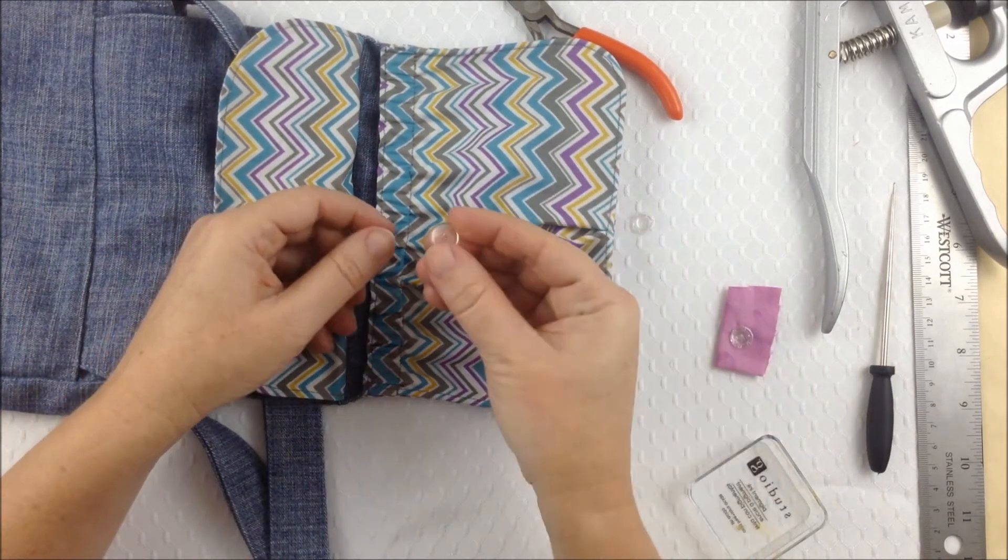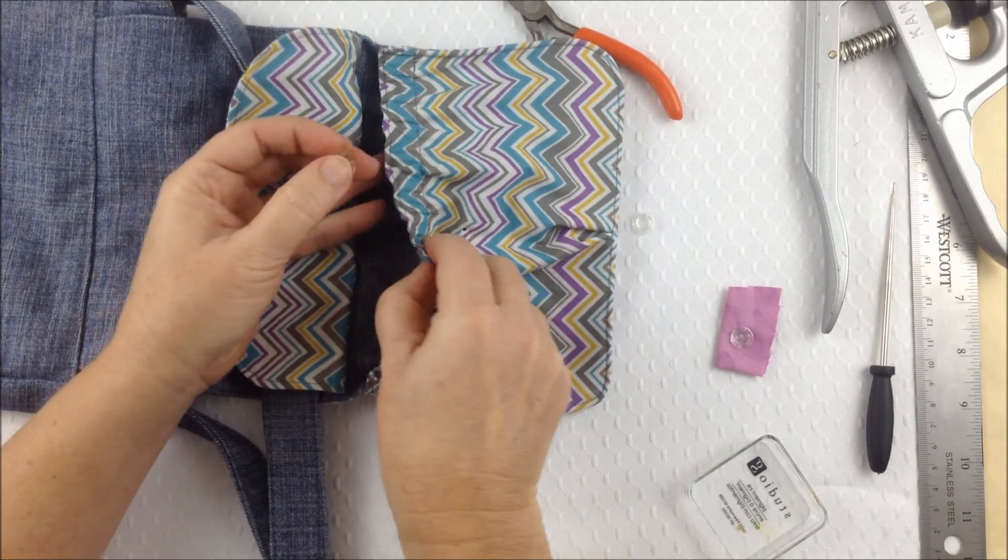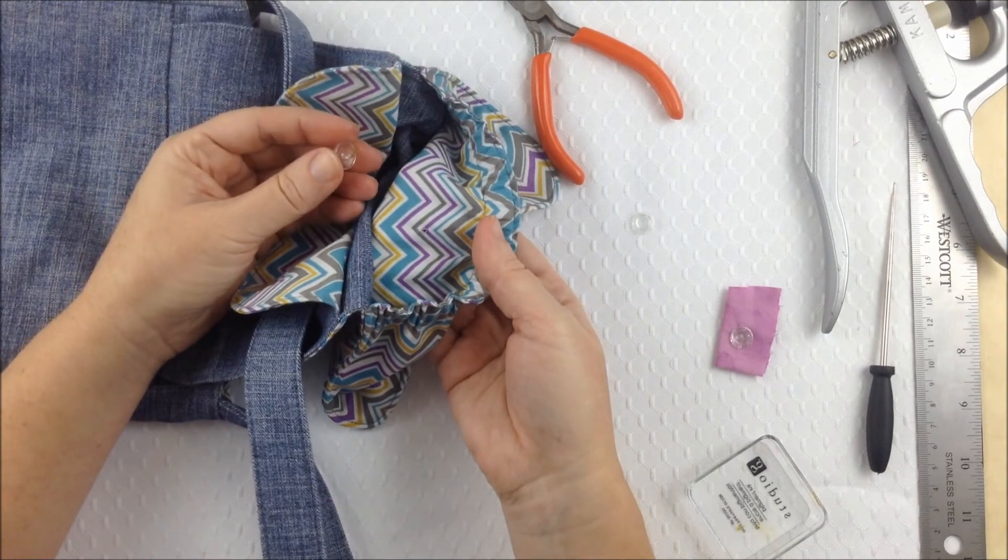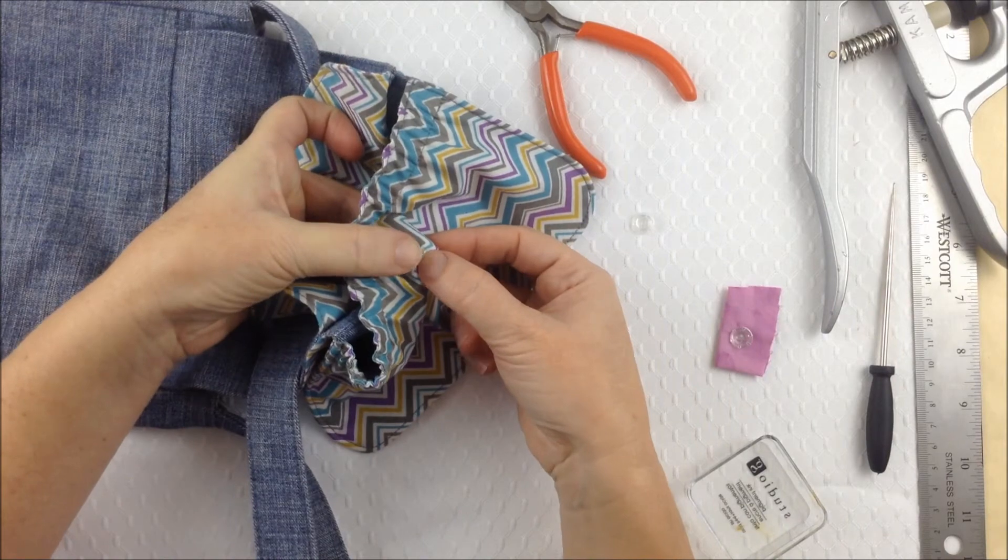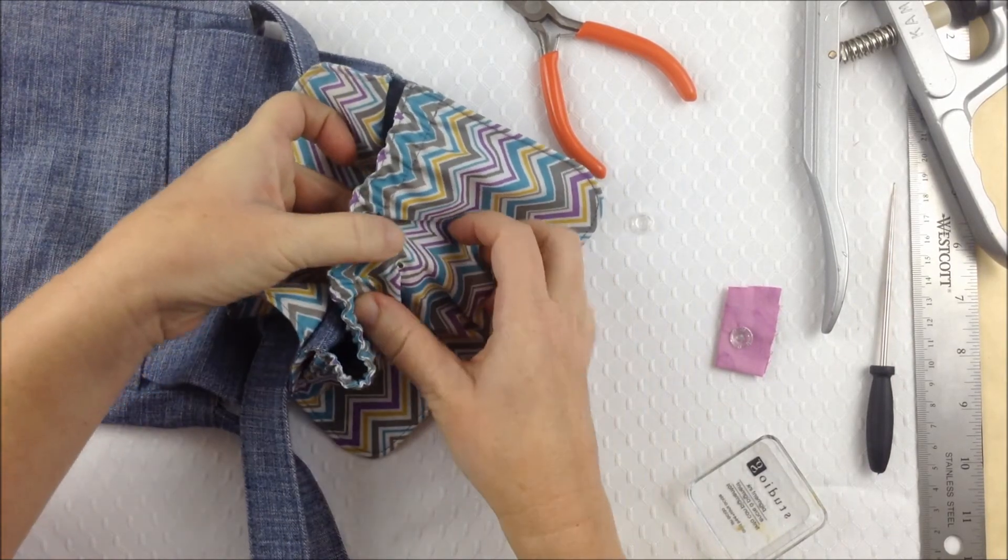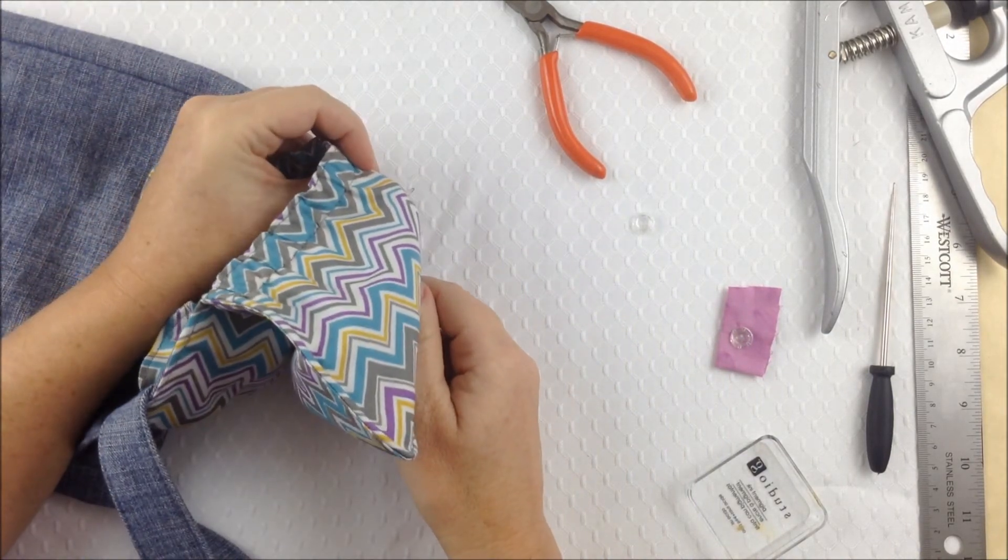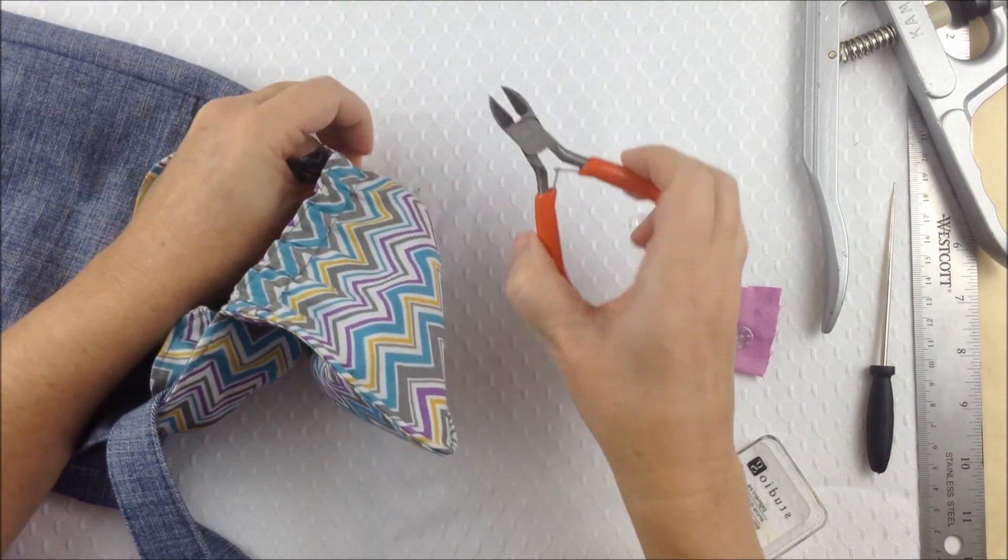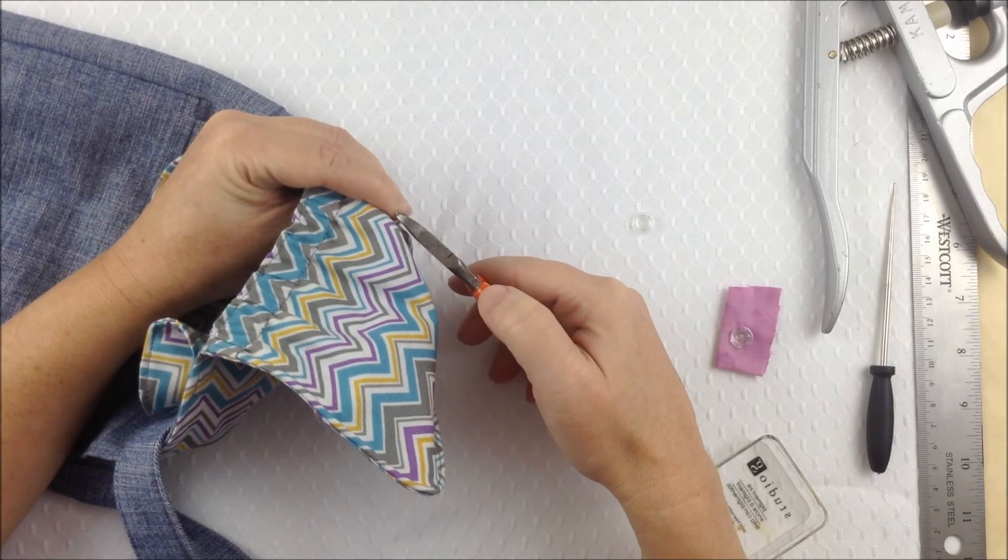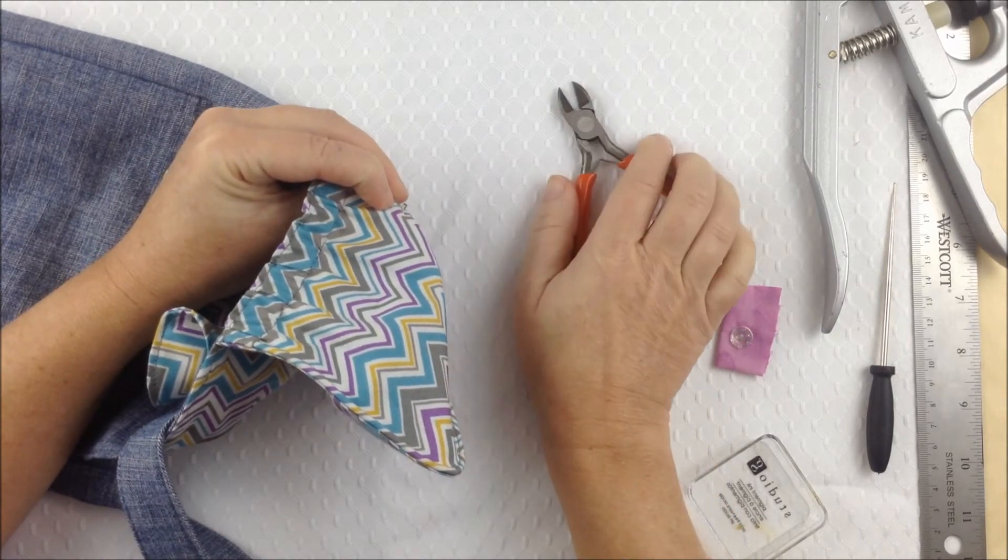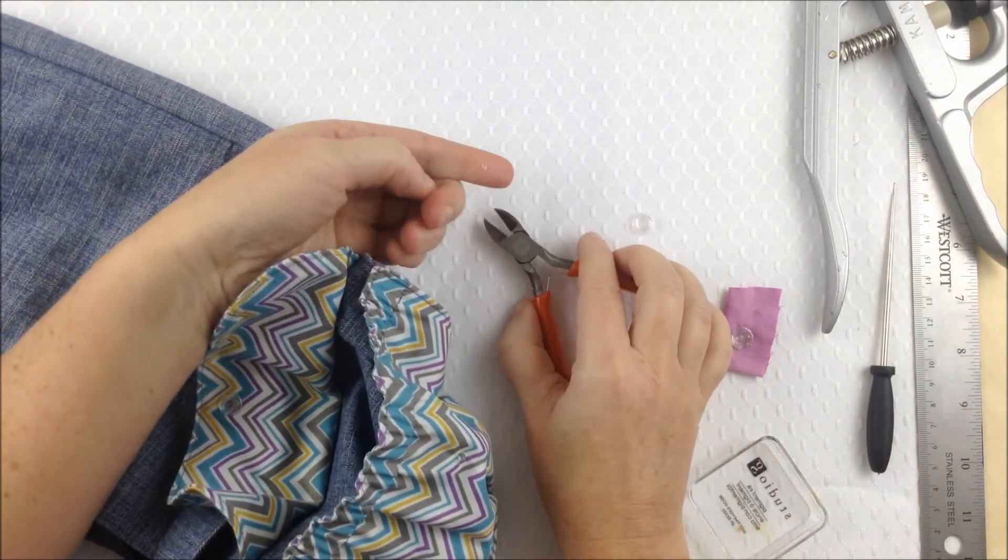So now we take the other section of the snap, the post. And this time we're going to put it on the back side. So the inside of the pocket. Push that through. And push the fabric right down to the bottom of the post. And again, I'm just going to cut that point off. You can see the point there. Just about an eighth of an inch. I'll show you on my finger. It's not very much at all.